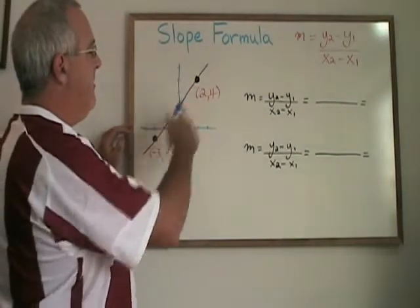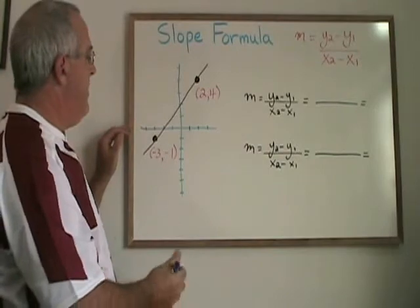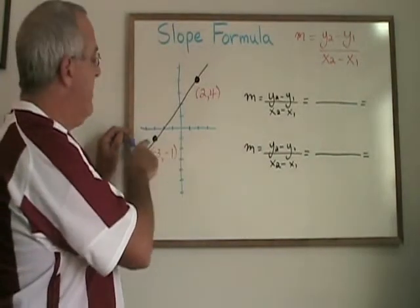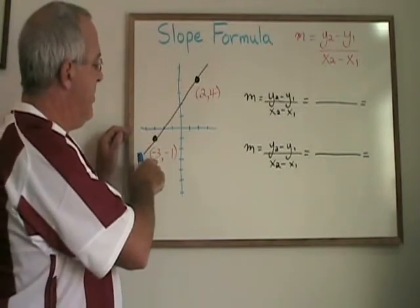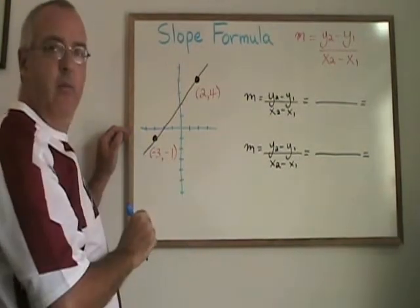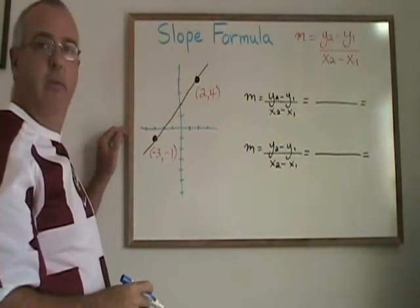I haven't labeled either of these two points on the graph as point 1 or point 2, but my habit is to, reading from left to right, name the first point that I'm getting to as point 1. So my x1 is negative 3, my y1 is negative 1. This makes this point 2 and my x2 will be 2 and my y2 will be 4.